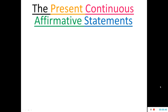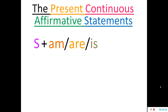To make an affirmative sentence, we take a subject first, and then according to the number and person of the subject, we take the auxiliary verb — either am, are, or is — and then we take the V4 form of a verb. The V4 form of a verb is made by suffixing -ing to the base form (V1) of a verb. So this is the basic formula: Subject + am/are/is + V4.